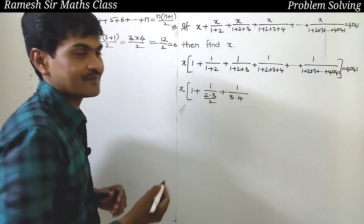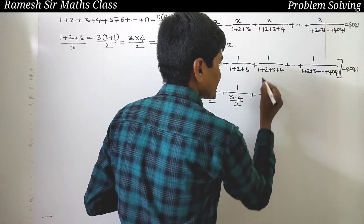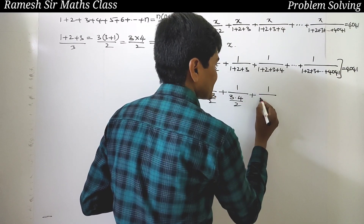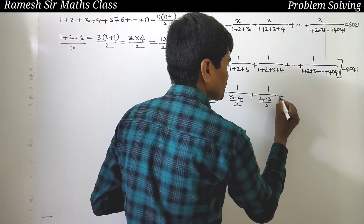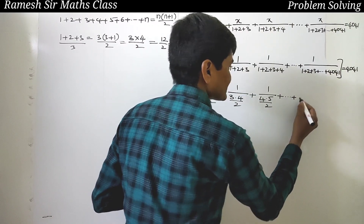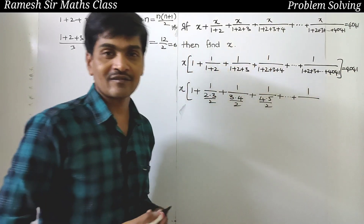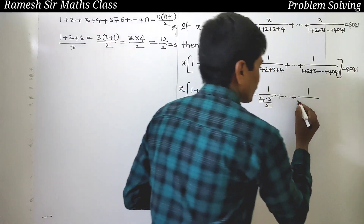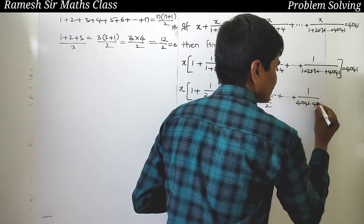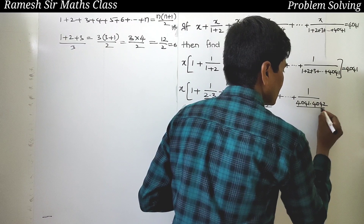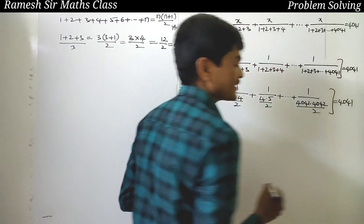Applying this formula, the denominators become: 1×2/2, 2×3/2, 3×4/2, 4×5/2, and so on, up to 4041×4042/2. So the last denominator is 4041 into 4042 by 2, and the whole expression equals 4041.